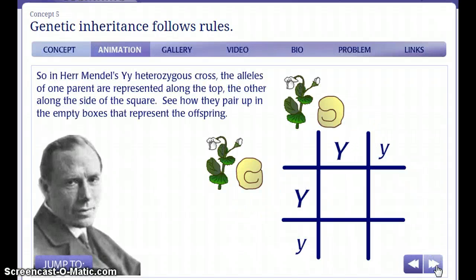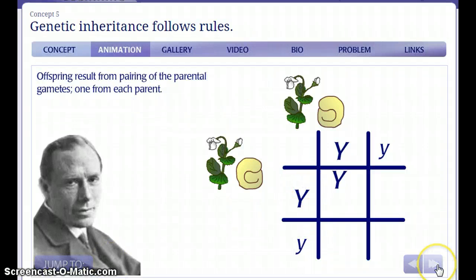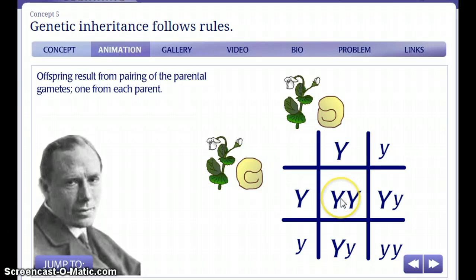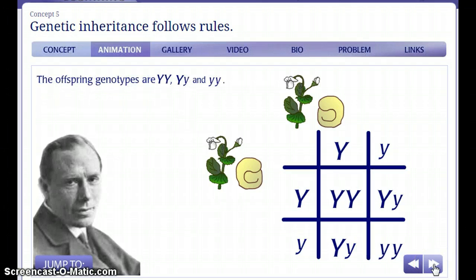So, in a heterozygous cross, the alleles of one parent are represented along the top, and the other along the side of the square. See how they pair up in the empty boxes for the offspring? These are the alleles for one parent, and these are the alleles for the other parent. The offspring result from the pairing of the parental gametes, one from each parent. This gives us the possible offspring genotypes for this particular heterozygous cross.